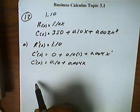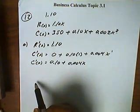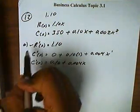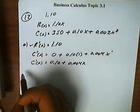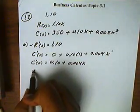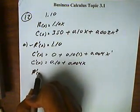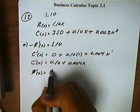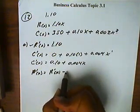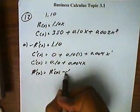Now, so they asked for the marginal revenue. We got that. And the marginal profit. Well, marginal profit comes from the marginal revenue minus the marginal cost functions.